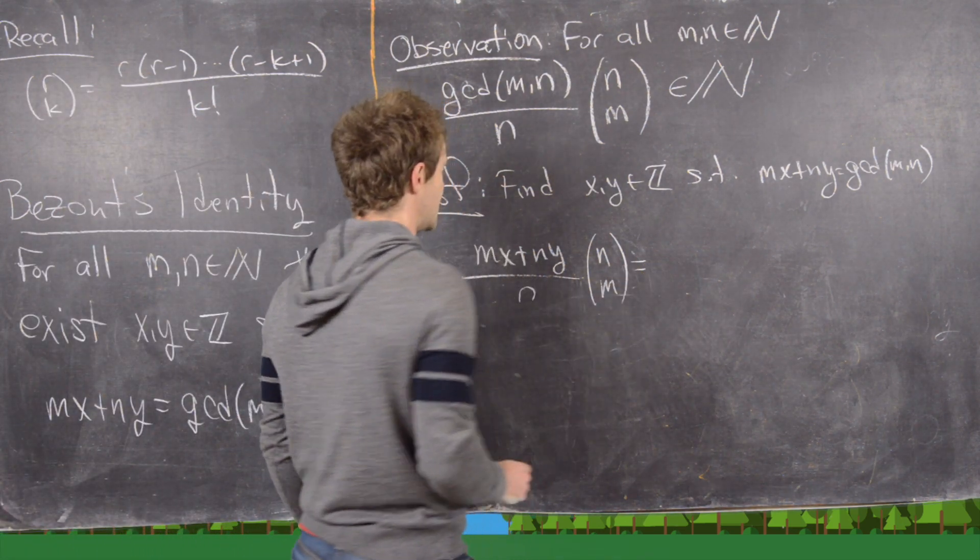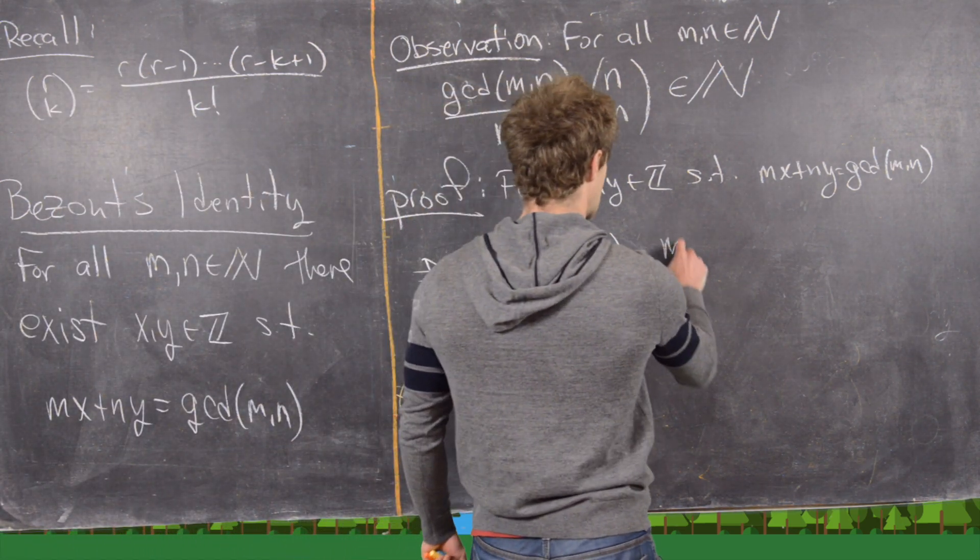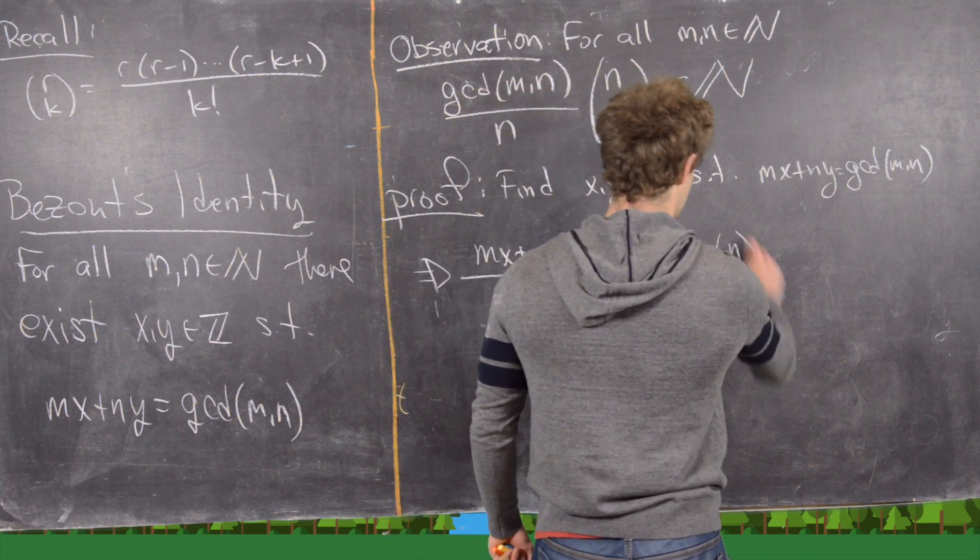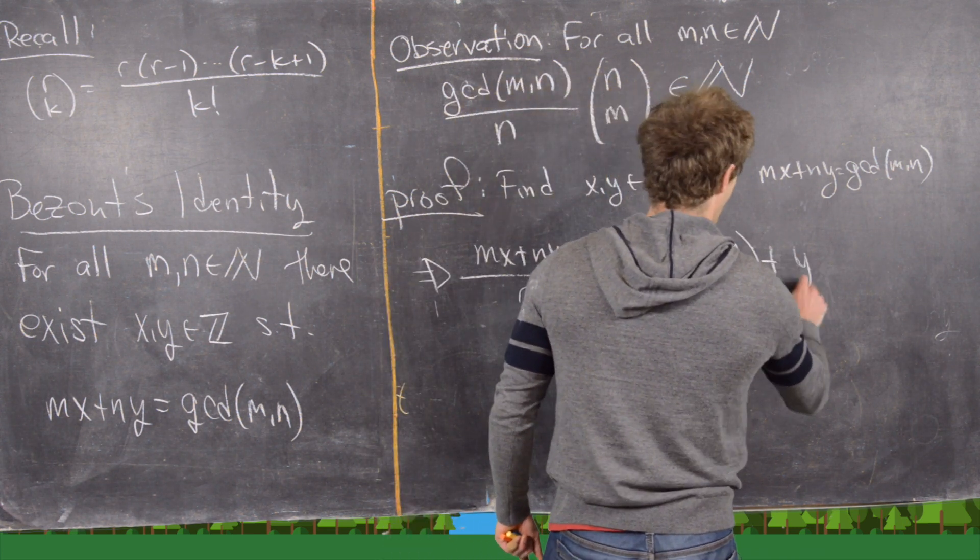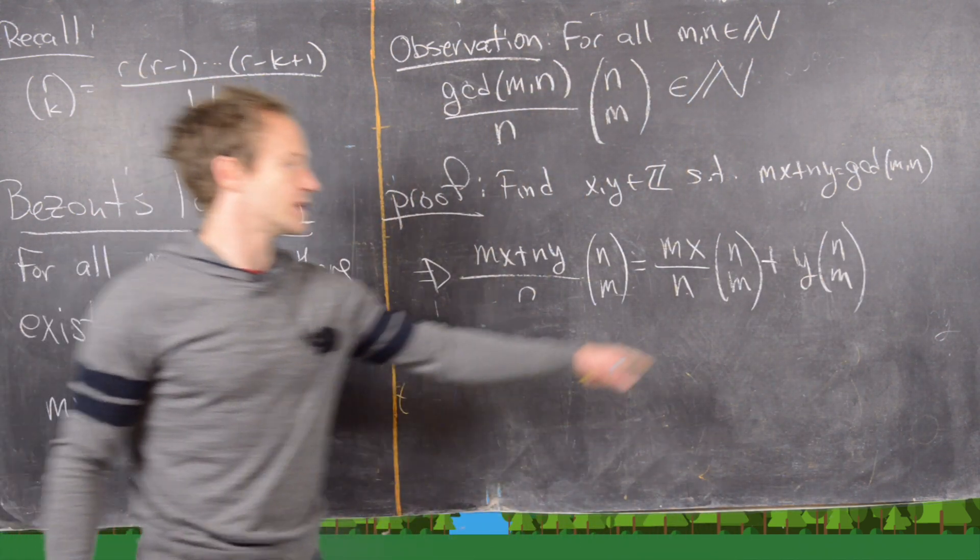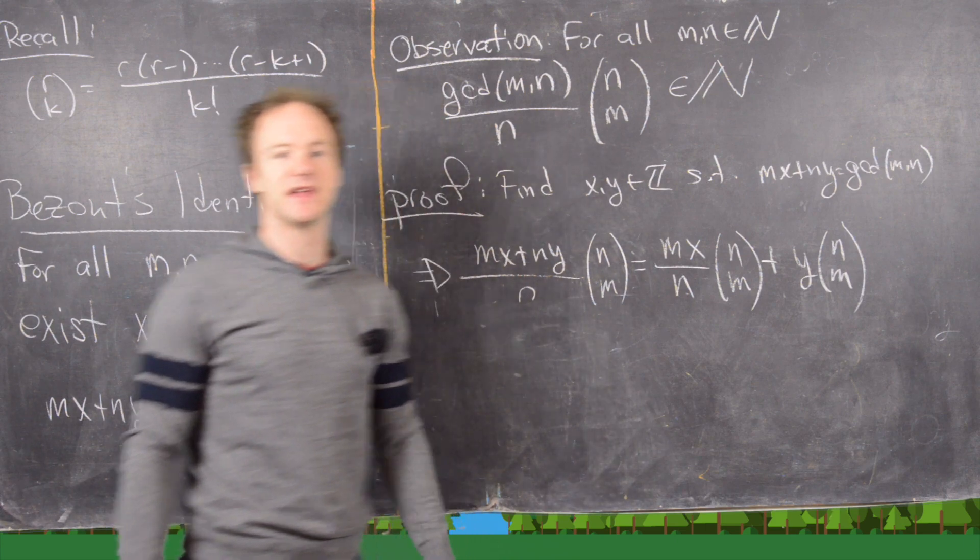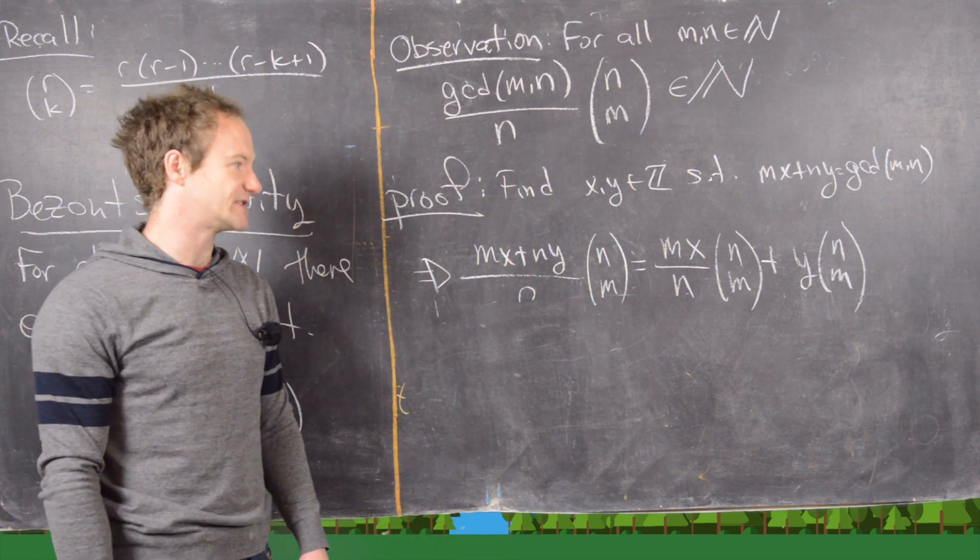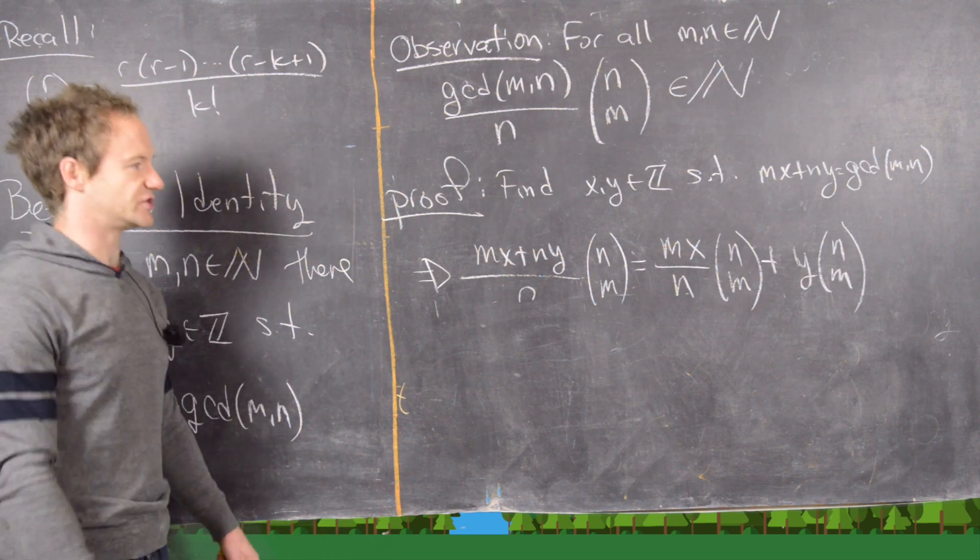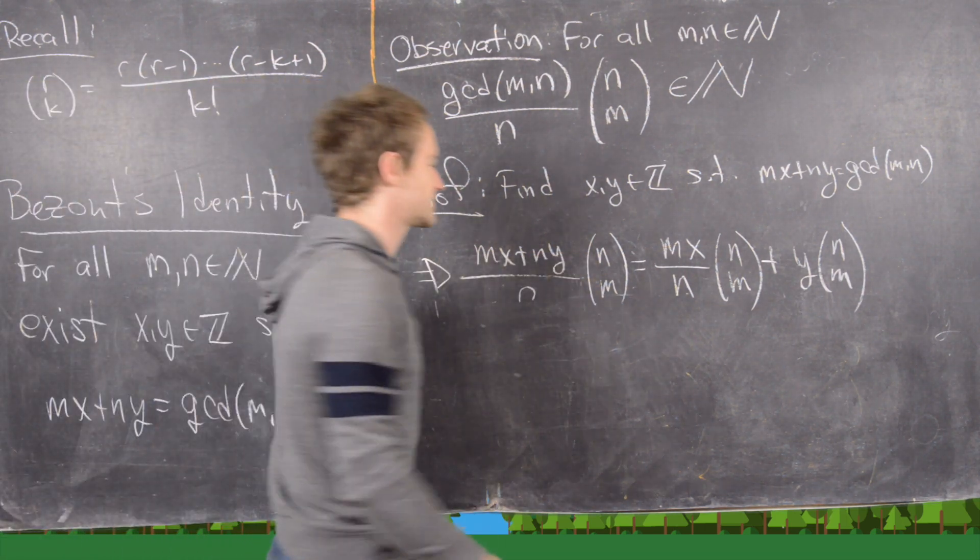So that's going to be the same thing as mx over n times n choose m plus y times n choose m. Okay, so notice we've already got something right here which is most definitely an integer because n choose m is an integer and y is an integer.